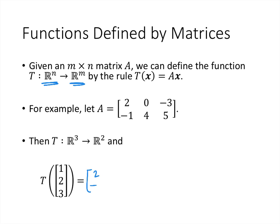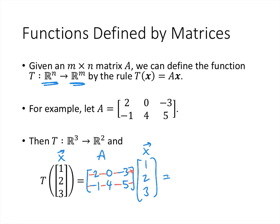So if I plug in the vector [1, 2, 3], what the function does is multiply that vector by A. We go across the row of the matrix and down the vector: 2 times 1 is 2, plus 0 times 2 is 0, plus negative 3 times 3 is negative 9, giving 2 plus 0 plus negative 9, that's negative 7. Then negative 1 times 1 is negative 1, 4 times 2 is 8, 5 times 3 is 15, so negative 1 plus 8 plus 15, that's 22.